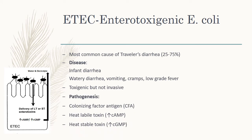For ETEC pathogenesis: attachment to the intestinal mucosa is mediated by fimbrial proteins called colonizing factor antigen (CFA). There are two types of toxins: heat-labile toxin (LT) and heat-stable toxin (ST). Heat-labile toxin increases cyclic AMP, while heat-stable toxin increases cyclic GMP. Both toxins increase the outflow of water and electrolytes into the gut lumen, causing diarrhea.